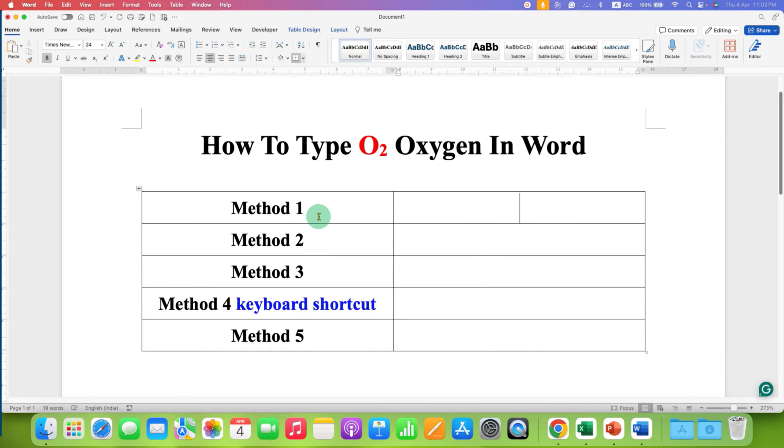In the first method, type O and then 2 on your keyboard. Select the number 2 using your mouse or keyboard. After the 2 is highlighted, press and hold the Ctrl key on your keyboard, and then press D.